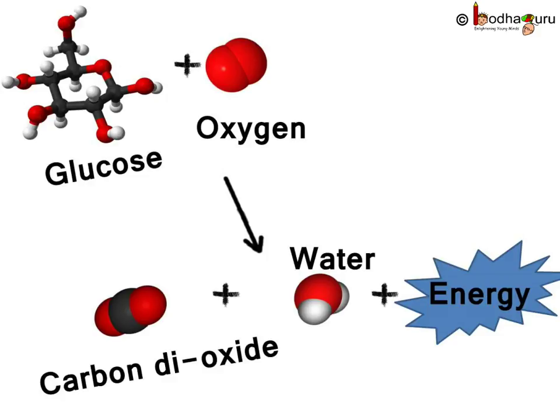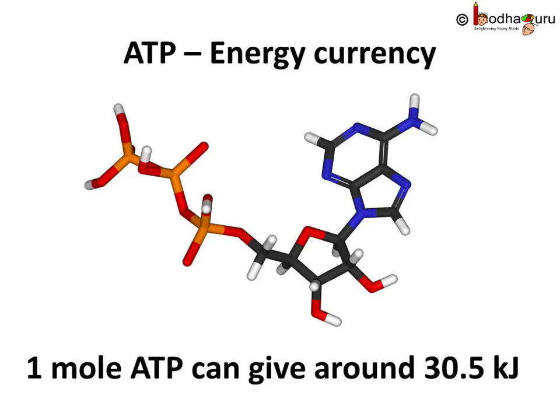It is actually a series of reactions. ATP is called energy currency because each mole gives around 30.5 kJ or around 7.3 kcal of energy. This energy is actually stored as chemical energy in the form of phosphate bonds. When ATP turns back to ADP, the phosphate bond is broken, then the energy is released. So the goal is to make that very important phosphate bond during cellular respiration.